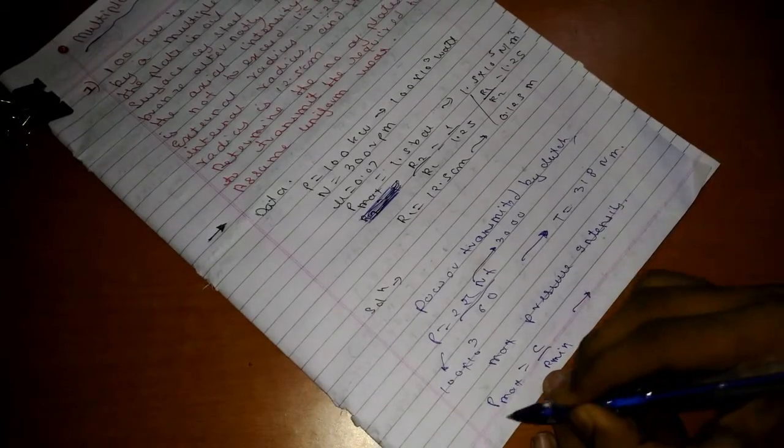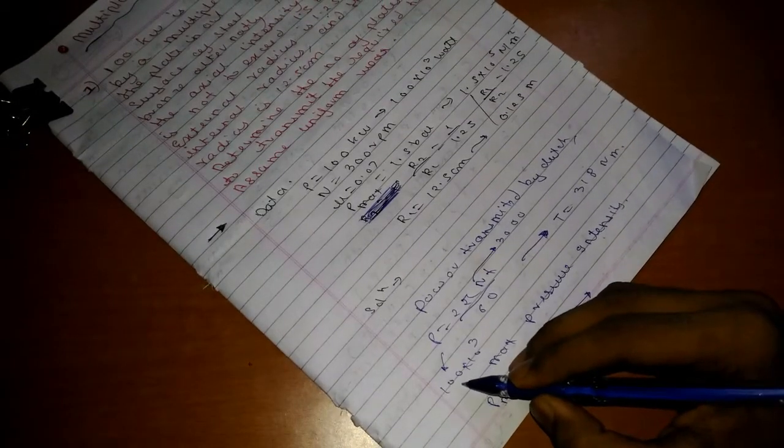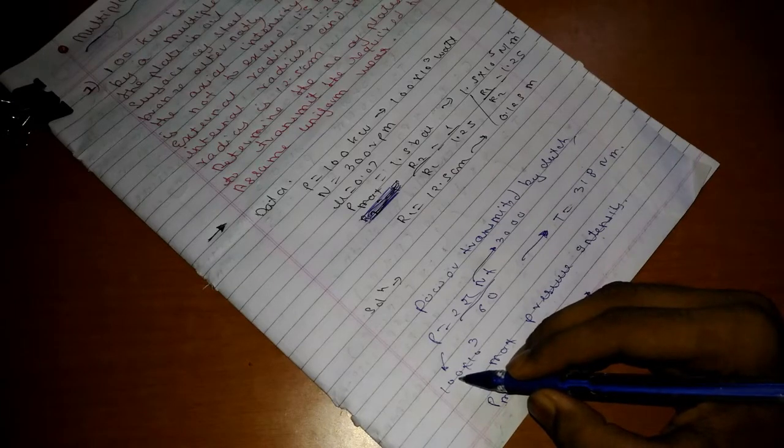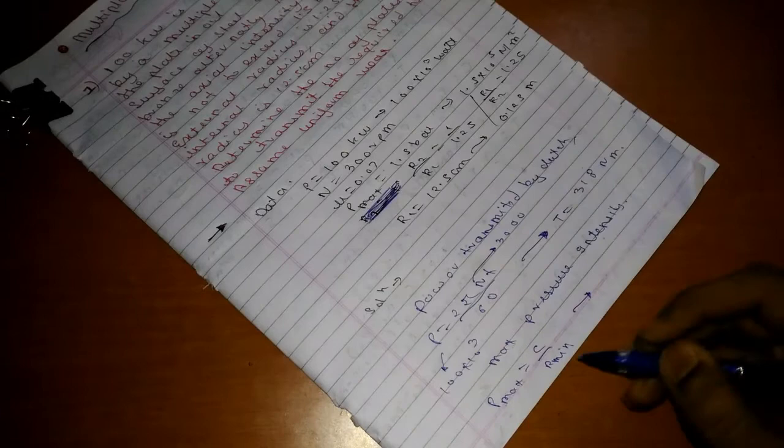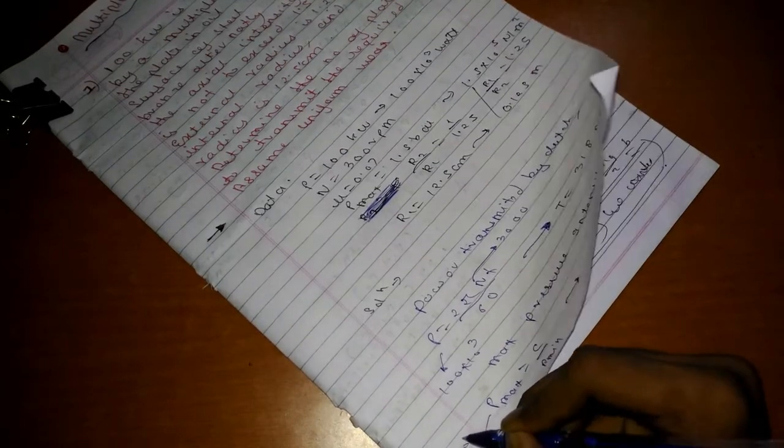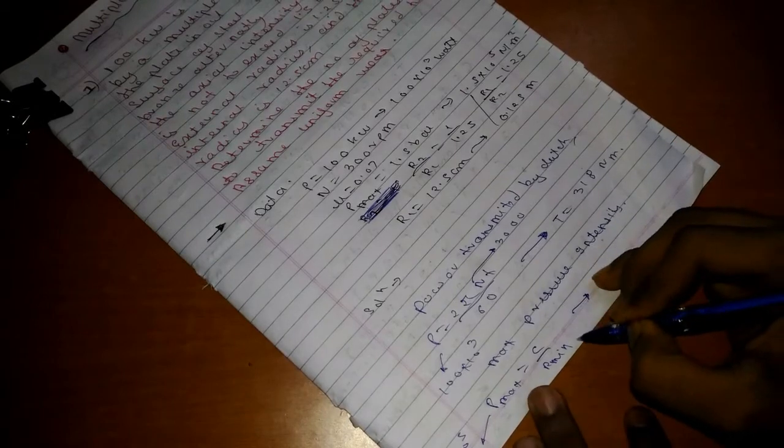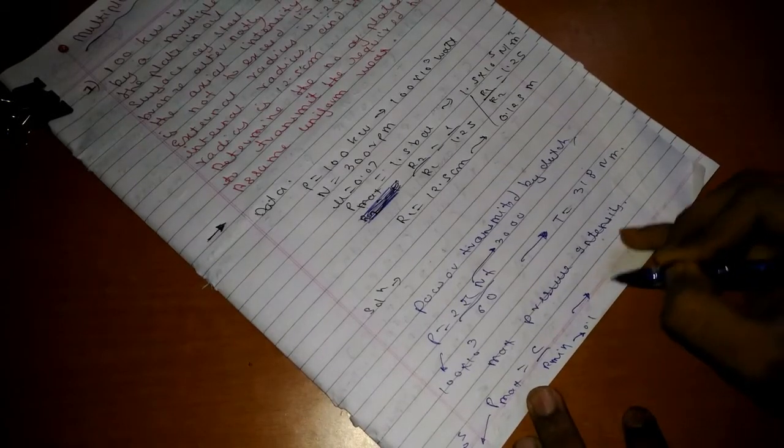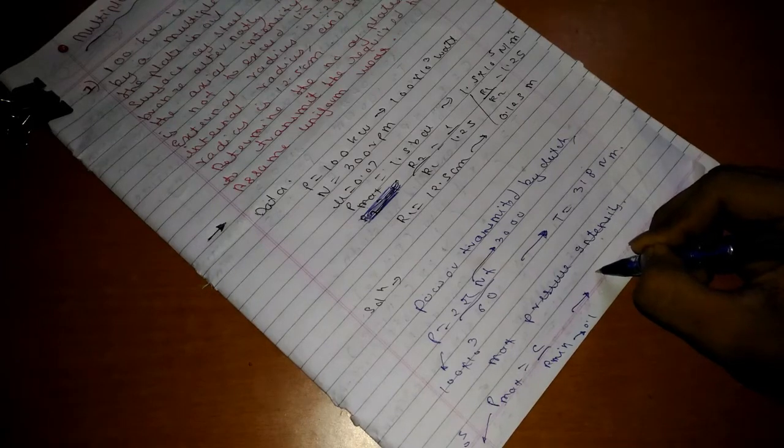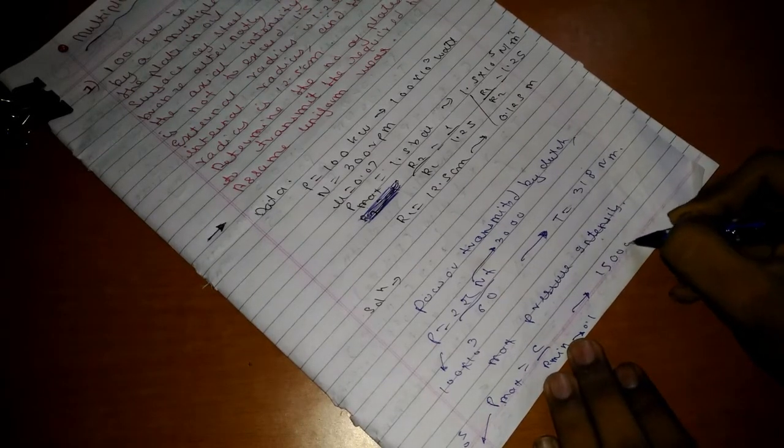We can directly find Pmax is 1.5 times 10 raised to 5, and R minimum is 0.1. So we get value of C as 15000.